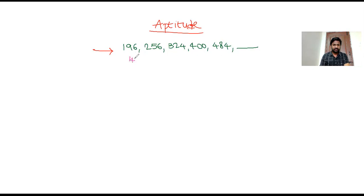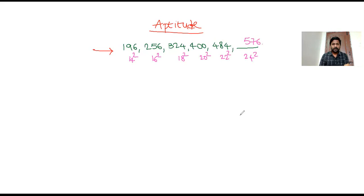196 is the square of 14, 256 is 16 squared, 324 is 18 squared, 400 is 20 squared, 484 is 22 squared — so the next number is 24 squared, which is 576. In this problem we're not using any formula — just a group of numbers with a certain property; identify that property and find the next number. That's a natural talent.